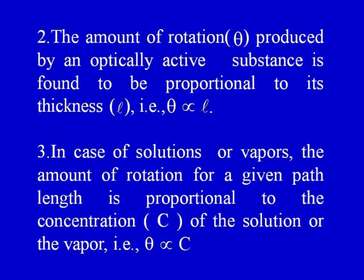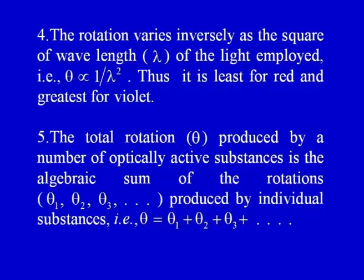Number two, the amount of rotation theta produced by an optically active substance is found to be proportional to its thickness — theta is proportional to L, the distance travelled in an optically active substance. Number three, in case of solutions or vapours, the amount of rotation for a given path length is proportional to the concentration C of the solution or vapour; C is measured in grams per cc. Number four, the rotation varies inversely as the square of the wavelength lambda of the light employed — theta is proportional to 1 upon lambda squared. This is rotational dispersion; naturally theta will be least for red and greatest for violet.